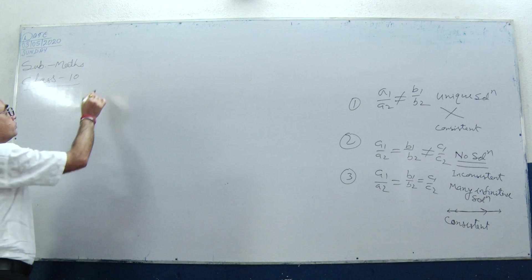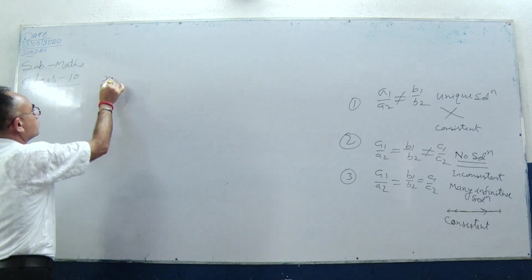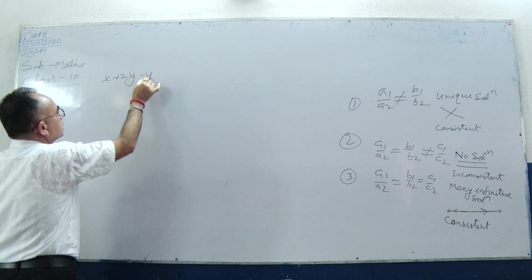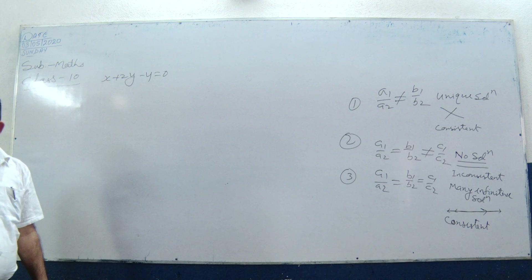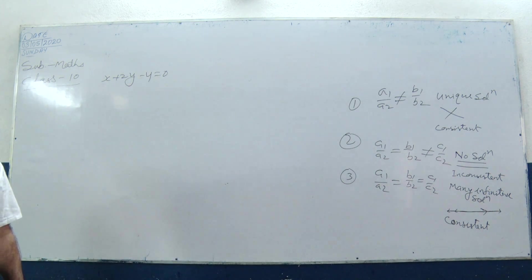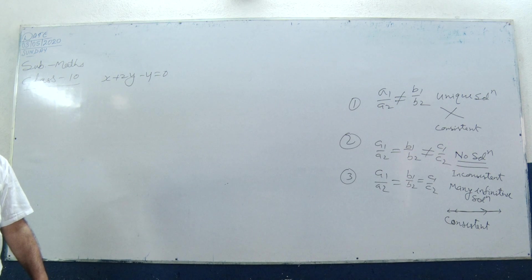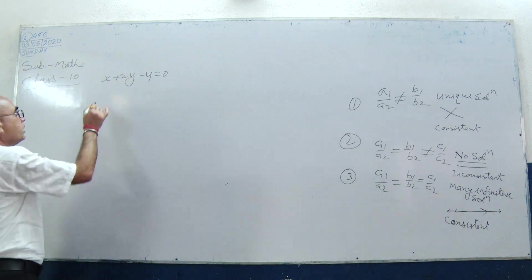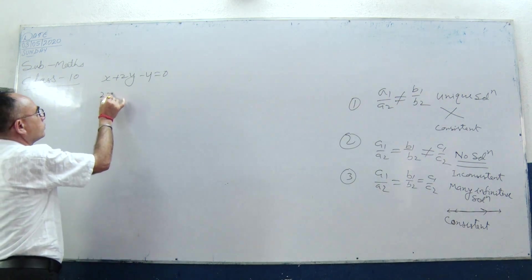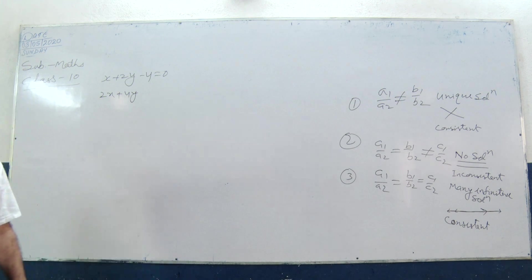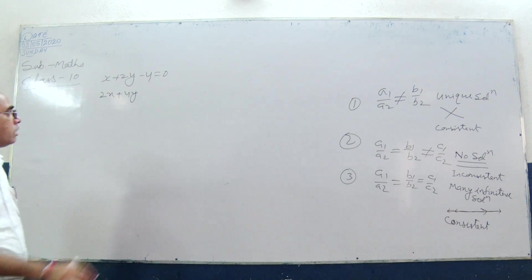The first equation is x plus 2y minus 4 equal to 0. The second equation is 2x plus 4y minus 12 equal to 0.